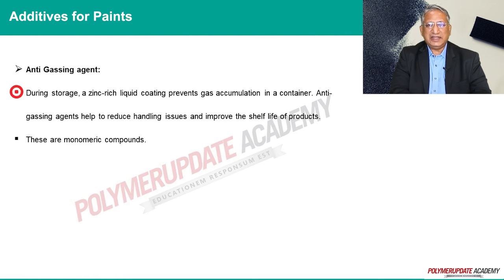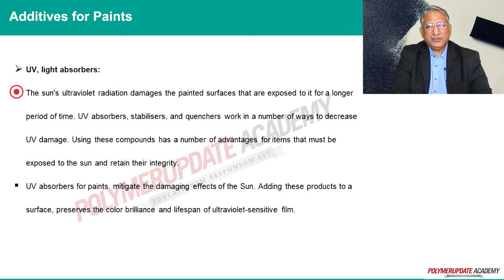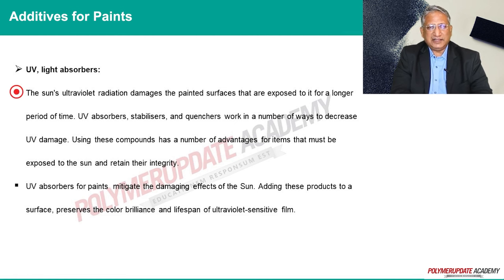UV and light absorbers: the sun's ultraviolet light takes a severe toll on painted surfaces when exposed to it for an extended time. UV absorbers, stabilizers, and quenchers reduce this damage through a variety of actions. Using these additives offers multiple benefits for products that must stand in the sun and need to be maintained in their integrity.